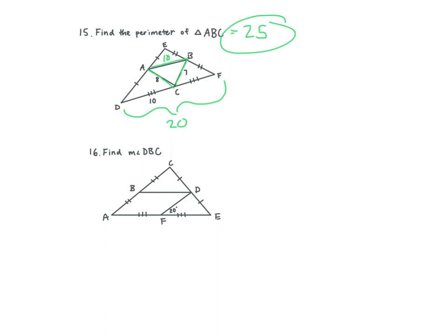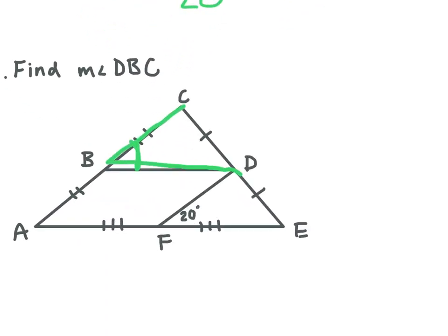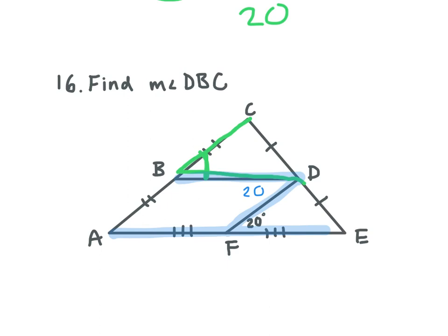Number 16. Find the measure of angle DBC. This line is parallel to this one, and this is our transversal. This angle here is going to be 20. We can also say that the mid-segment here and this side are parallel, and this is our transversal, so now we have another two alternate interior angles. So the angle that we're looking for is also 20. The measure of DBC is 20 degrees. Again, there are multiple ways to do these.